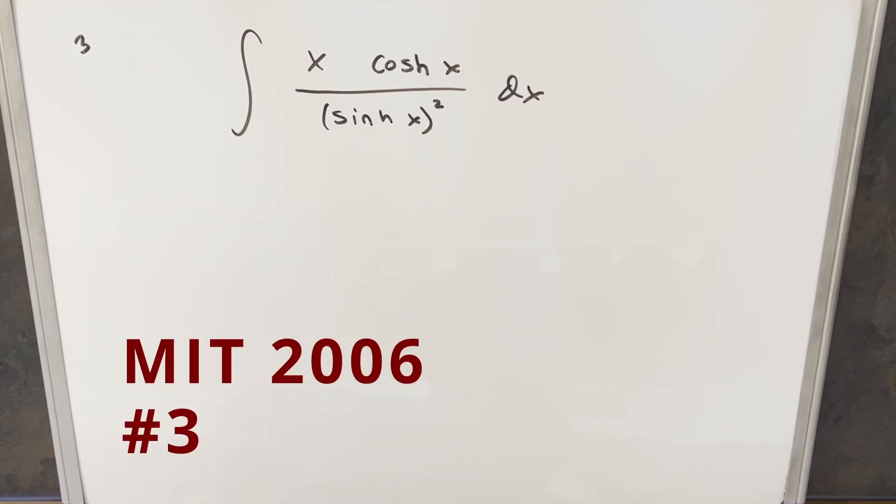Okay, we have here today another interesting integral from the MIT integration bee from 2006. This is problem three. We have the integral of x cosh x over sinh x squared dx.